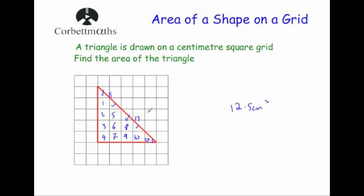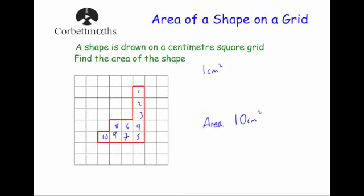You just count the number of whole squares and then put half squares together, and then any leftover you just put as the 0.5. So to find the area of a shape that's been drawn on a grid, you just count the number of squares inside of it.